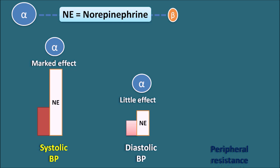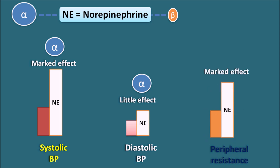As norepinephrine acts as a vasoconstrictor via alpha receptors, peripheral resistance is markedly increased. The marked increase in peripheral resistance is again attributed to alpha action. In summary, norepinephrine increases systolic blood pressure, diastolic blood pressure, and peripheral resistance — all attributable to its alpha receptor action — but has more effect on systolic blood pressure than on diastolic.